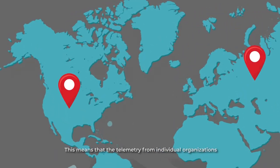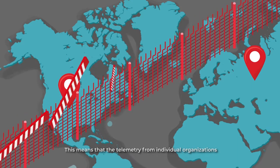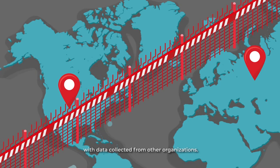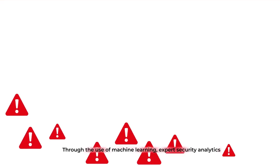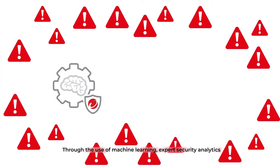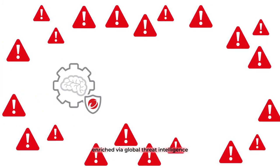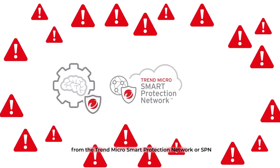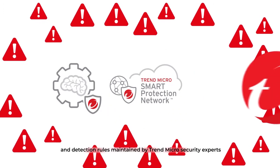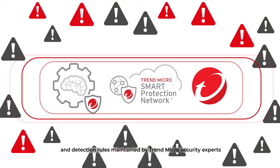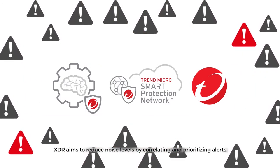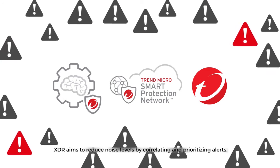This means that the telemetry from individual organizations is carefully protected from any cross-contamination with data collected from other organizations. Through the use of machine learning, expert security analytics enriched via global threat intelligence from the Trend Micro Smart Protection Network or SPN, and detection rules maintained by Trend Micro security experts, XDR aims to reduce noise levels by correlating and prioritizing alerts.